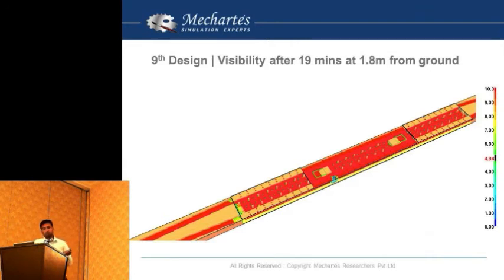This was the visibility after 19 minutes when the fire is at peak. This is the visibility at 1.8 meters from ground. Most of the area visibility is more than 10 meters. Only in the platform, this corner area and near the fire, the visibility is less. These are the two fire exits where the visibility was good, so people could run away.